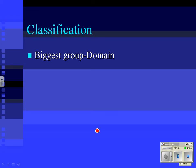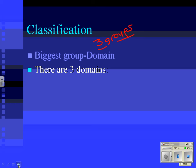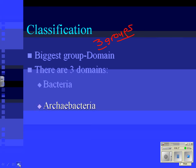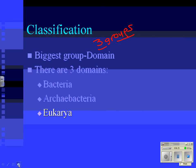Nowadays we take all organisms and put them into three basic groups called domains. Those three domains are: bacteria, archaebacteria, and eukarya.